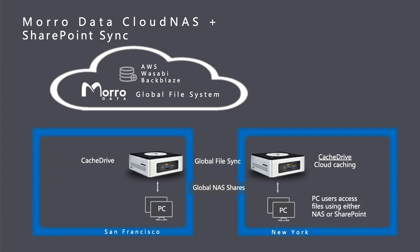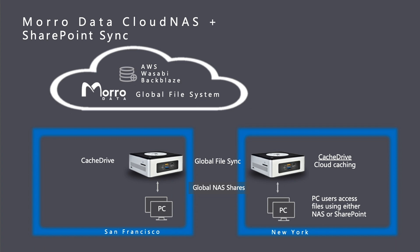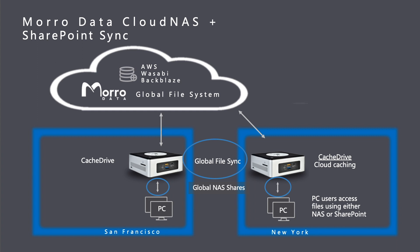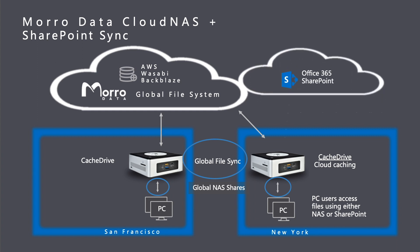As the diagram shows, each of the two locations has a cache drive, which works as a gateway and cache to the files in the cloud. While PC users interface to the cache drive as NAS shares, the Moro Global File System syncs the files in real-time among the cache drives at multiple locations. Cloud NAS also supports two-way syncing with Office 365 SharePoint files in real-time.